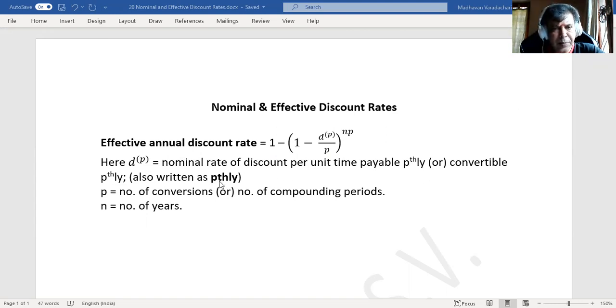Or you can also write it as pthly or convertible pthly. Here, p is the number of conversions or the number of compounding periods, and n is the number of years.